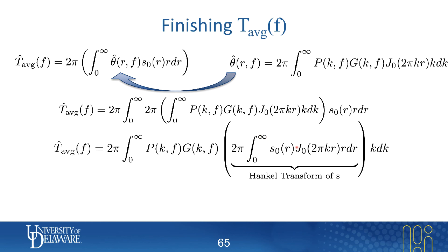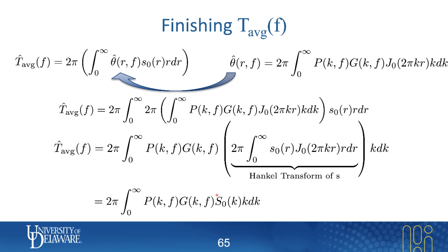By rearranging the integration order, I can gather terms in a way that forms another Hankel transform. Specifically, the spatial profile of the sensing or probe beam multiplied by the Bessel function and integrated over R is exactly the definition of the Hankel transform of that function — which is our probe beam profile S. So I can simplify the whole expression: what remains inside the integral is the Hankel transform of the pump beam, the Hankel transform of the point response function, and the Hankel transform of the probe beam S. The easy part is calculating the Hankel transforms of the probe and pump beams — they're both Gaussians, so that's straightforward — and then we'll work out the point response function using a separate technique.